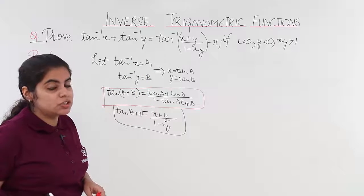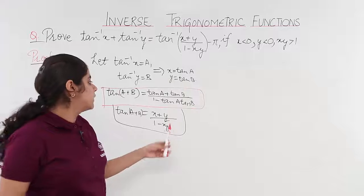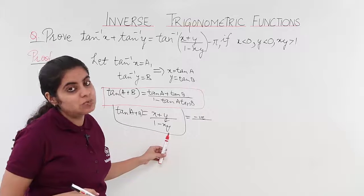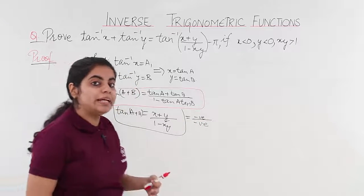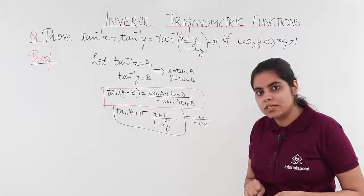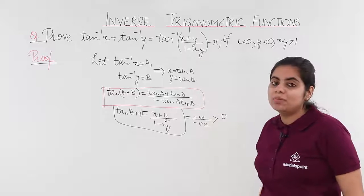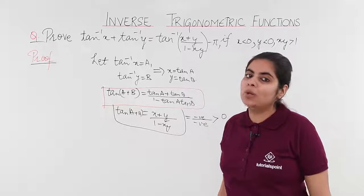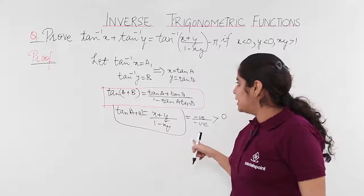Now, what are the conditions given for x and y? x < 0 and y < 0, meaning both are negative. Negative plus negative gives a negative numerator. What about 1 − xy? Since xy is positive (say 2), then 1 − 2 = −1, which is also negative. So negative divided by negative — they cancel, giving a positive result. That means tan(a + b) > 0.